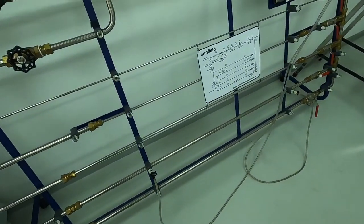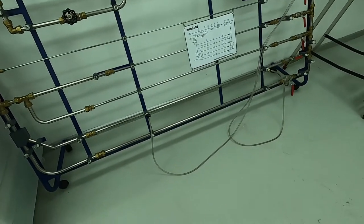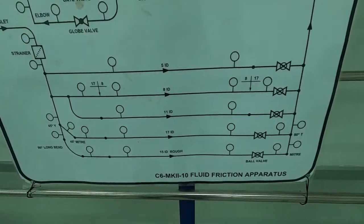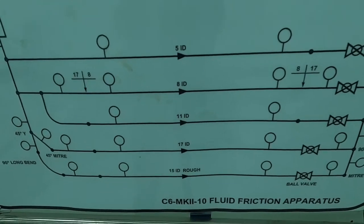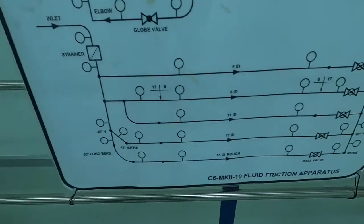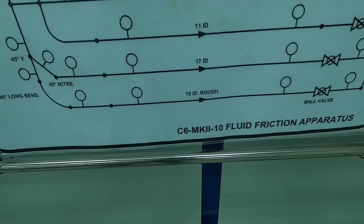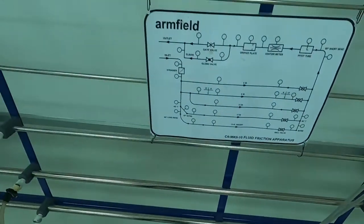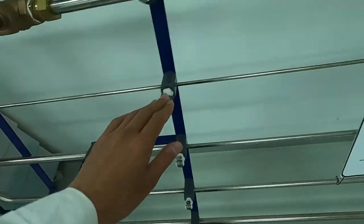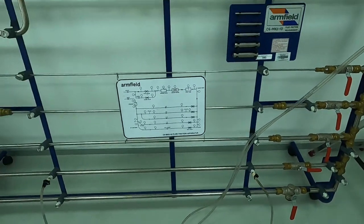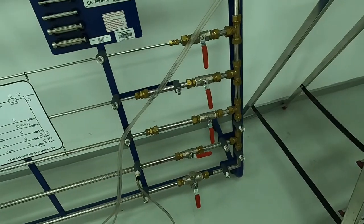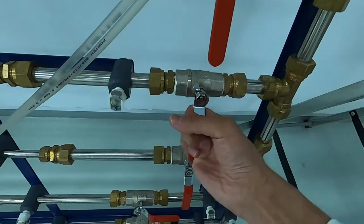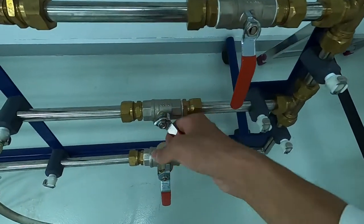The unit has four smooth test pipes and one rough test pipe. In the diagram you can see the internal diameters of the test pipes: the first one has 5 millimeters, the second 8, then 11, 17, and the rough pipe at the bottom has 15 millimeters. The length between the tappings is one meter for each test pipe.